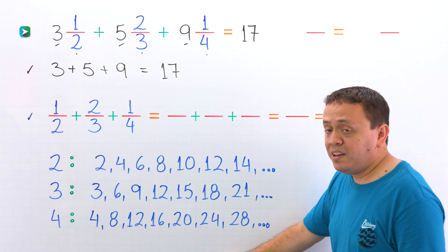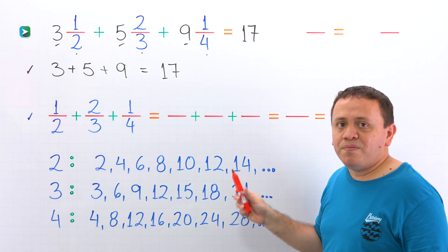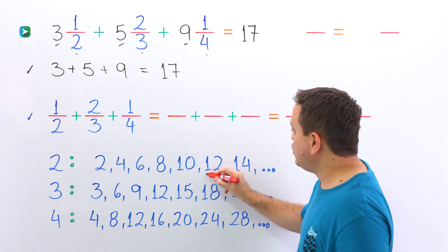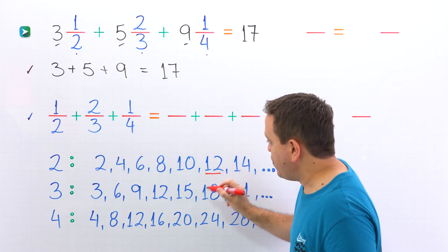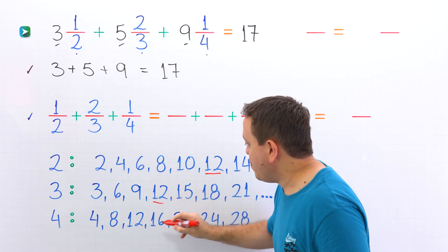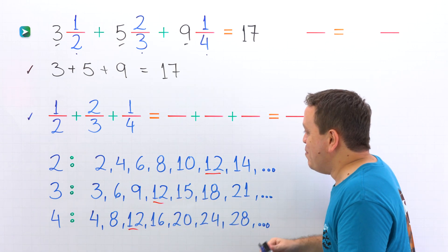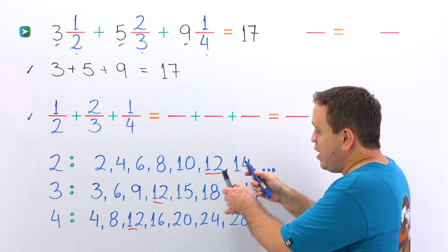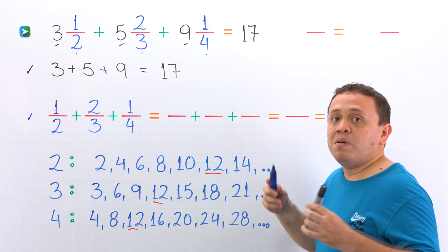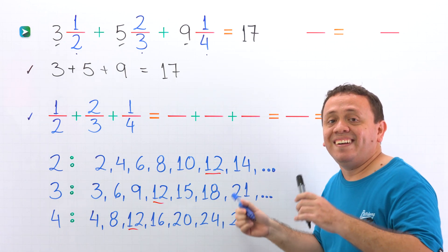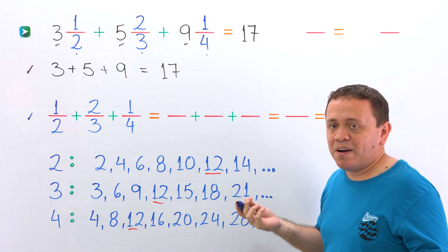As you can see, the smallest number that we can find in all three lists is twelve — twelve here, twelve here, and twelve here. Twelve is the least common multiple of the denominators, or the least common denominator.